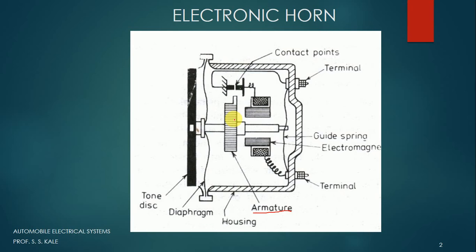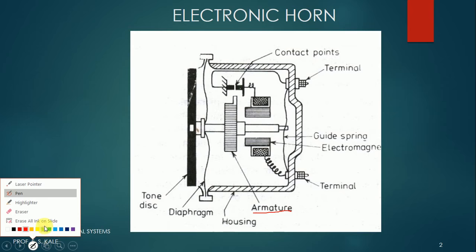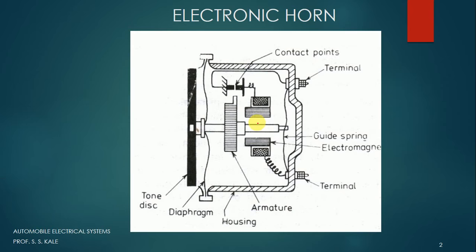Before going to the working of this particular horn, we should know that any component which moves with a high frequency will generate a sound. We know the example of a razor blade — a shaving blade. When we give a vibration to that, it will create a sound. Similarly, when we give a vibration to any component with a particular frequency, it will create a sound. The same principle is used here: to generate a sound, we have to move this particular diaphragm with a particular frequency. If it is vibrating with a particular frequency, then the sound will be created. So our aim is to move this with very high frequency, and giving that high frequency work will be done by the armature.